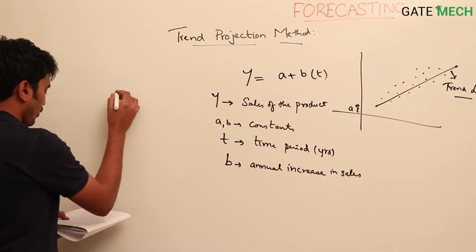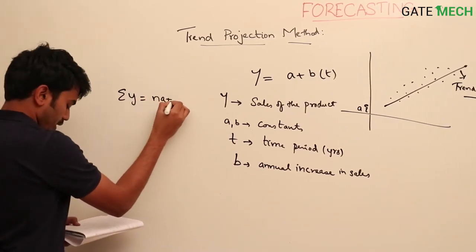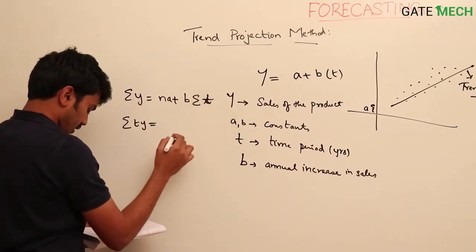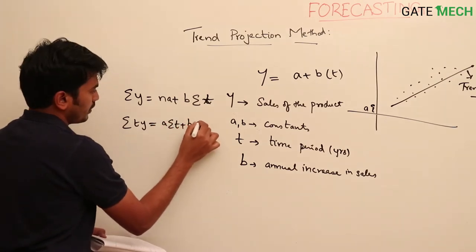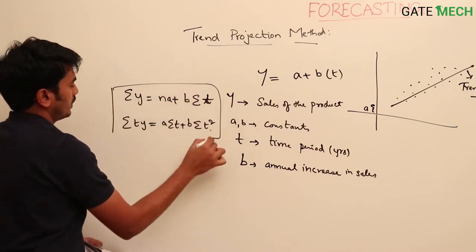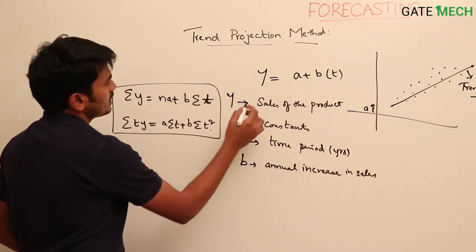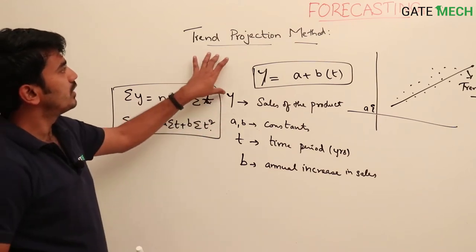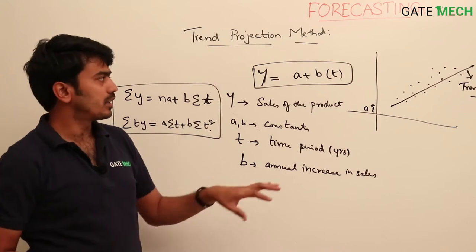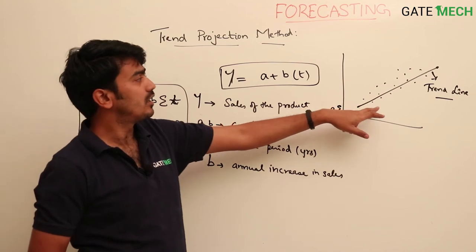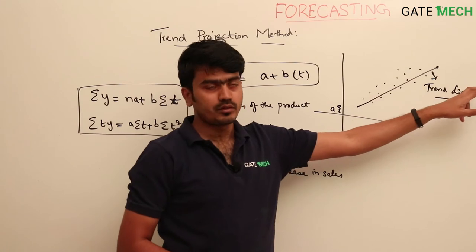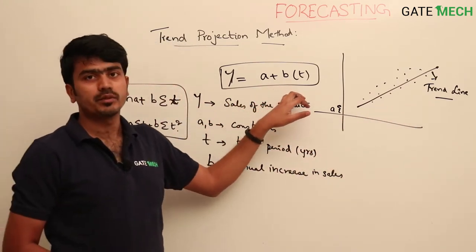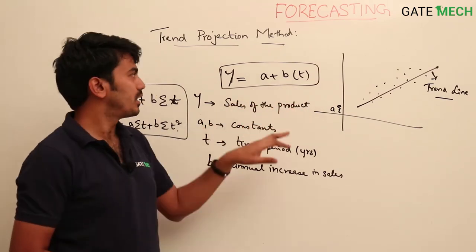Using the least square method we calculate the values of a and b using the equations: sigma y = n·a + b·sigma t, and sigma t·y = a·sigma t + b·sigma t². Once we find a and b, we use the expression to forecast sales for the next period t. The basic assumption is that the time series shows a trend that continues into the future. Here we assume a linear trend, though it can also be exponential.